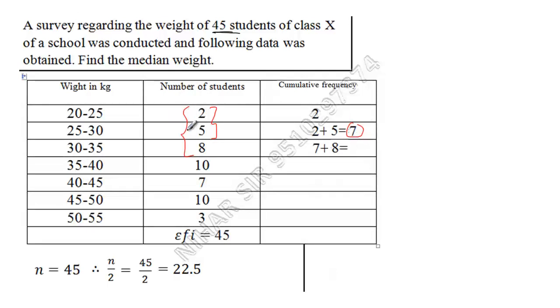And 2 plus 5 is equal to 7, so you can use this info also. Just add 8 to it, that is 15. Now use this 15. So 15 plus this 10, that is 25. 25 plus 7, that is 32. 32 plus 10, that is 42. 42 plus 3, that is 45. And these two will always match.